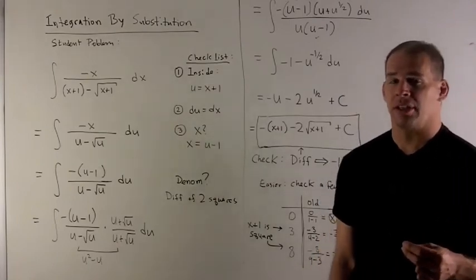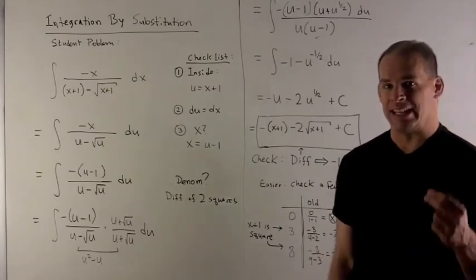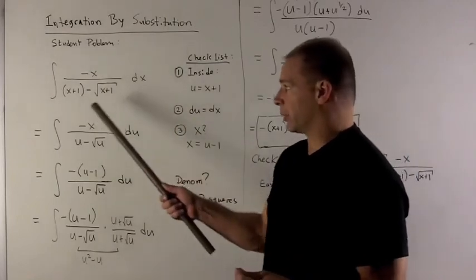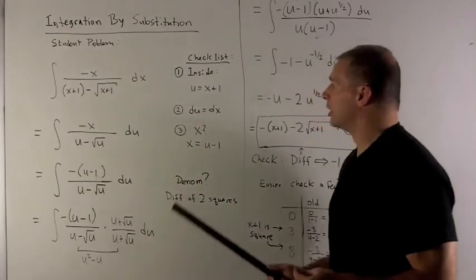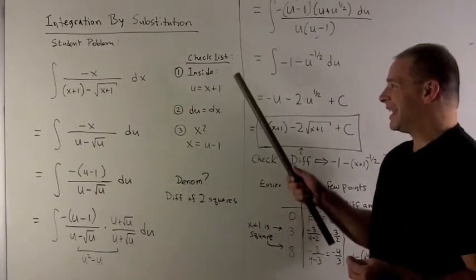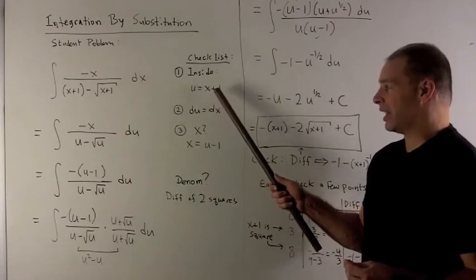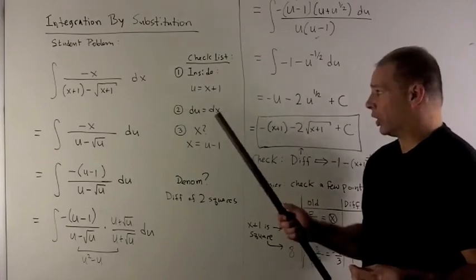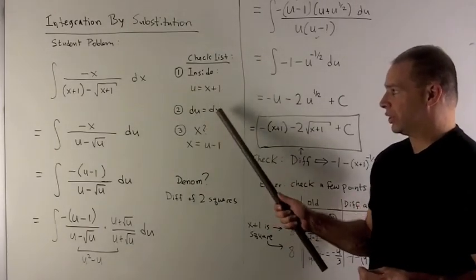Let's run through our checklist. For my first step, I'm going to target the inside of the composition. In this case, it's going to be x plus 1 on either of these terms. So we let u be equal to x plus 1. Next, I'm going to differentiate this with respect to x — du equals the derivative times dx — and we note the derivative of this is 1, so du equals dx.